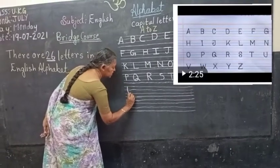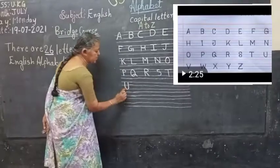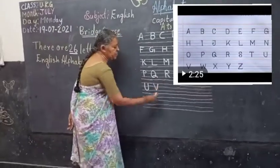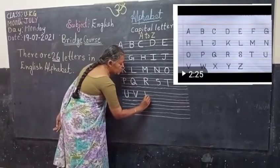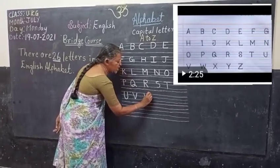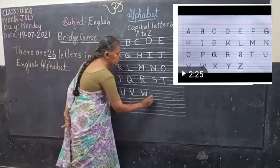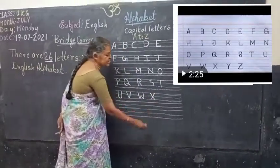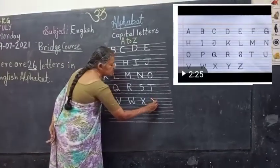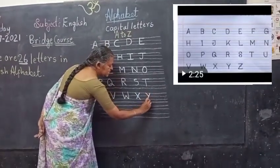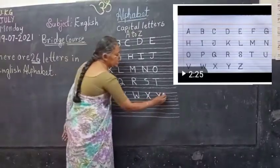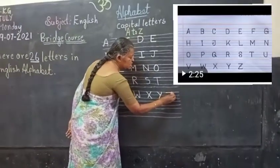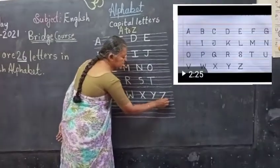Do the curved line like this — that is S. Strike line, crossing strike line — that becomes T. Next, U: curve like this. Next, V: slanting line, go up — that is V. W: slanting line, go up, come down, again go up — that is W. Next: two slanting lines crossing — that is X. Slanting line and come down like this — that is Y.